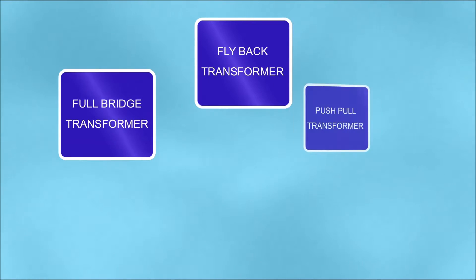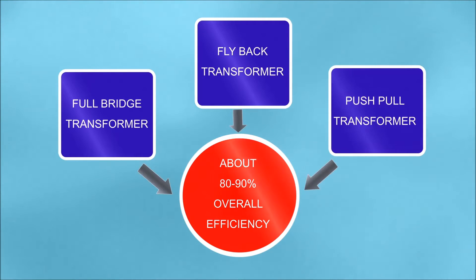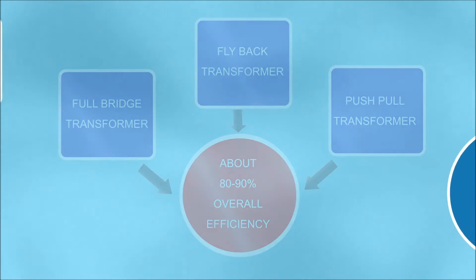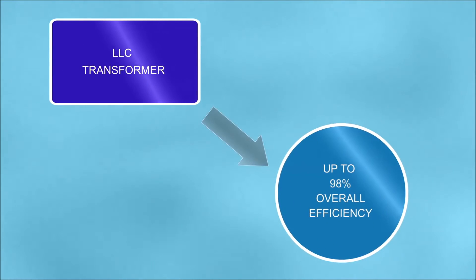Flyback and push-pull transformers optimized provide only 80 to 90% overall efficiency, whereas an optimized LLC topology can provide up to 98% overall efficiency.